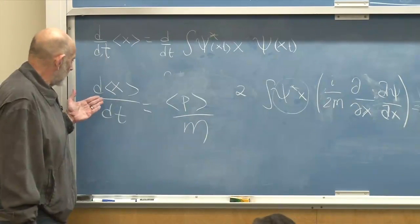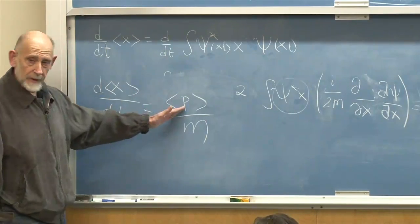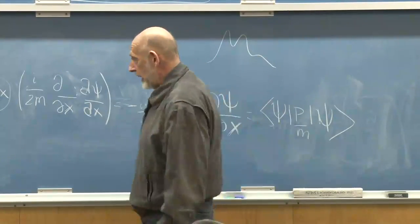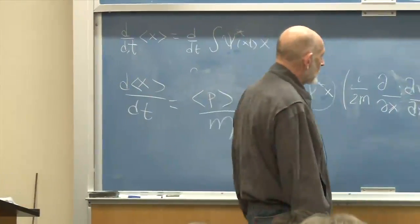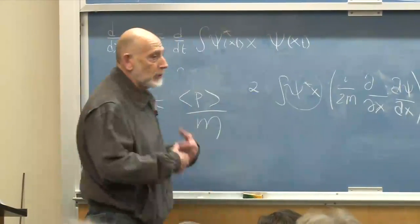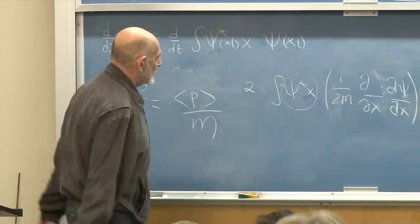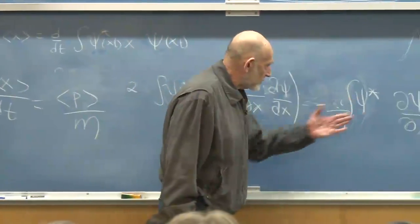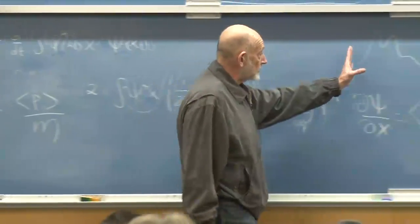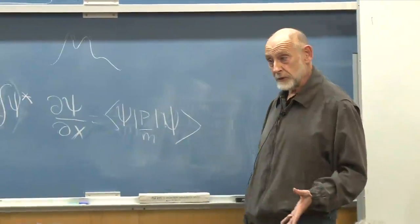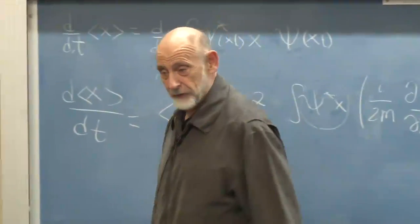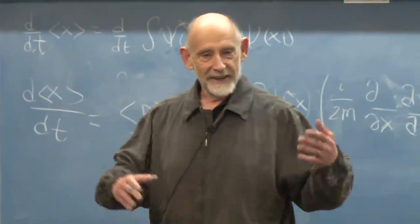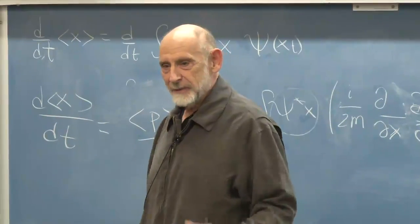That's a half of mechanics. We found that dx/dt equals p over m — that's one of Newton's equations. What's the other half? dp by dt. That's Newton's law — we need to now calculate how the expectation value of momentum changes with time.